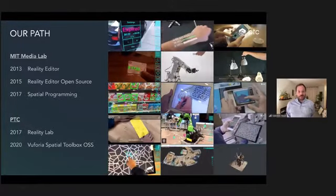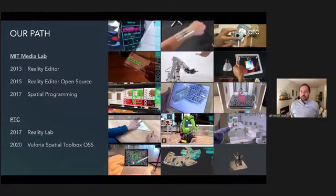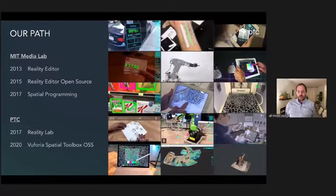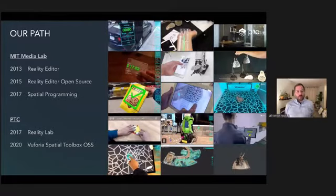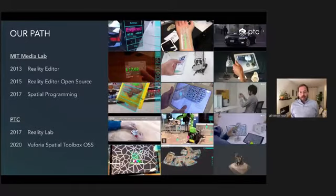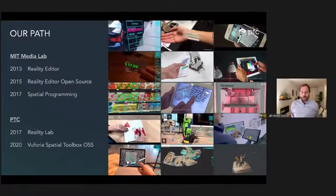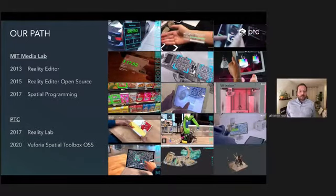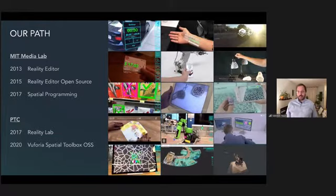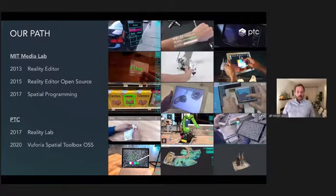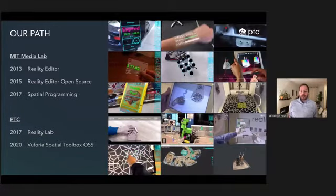In 2013, we started with the Reality Editor back at MIT — a tool to understand and control the physical world better around us. That work was so successful that in 2015 we open-sourced the Reality Editor for everyone. In 2017, we added spatial programming into this tool, and we brought it all to PTC where we started the PTC Reality Lab. Our mission is to bring technology that is three-plus years ahead and advances us in connecting and understanding the world around us. In 2020, we published the World Around Us as an open source project, and pretty much all the work you will see in this presentation is open source.